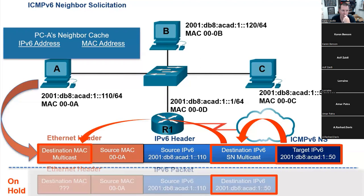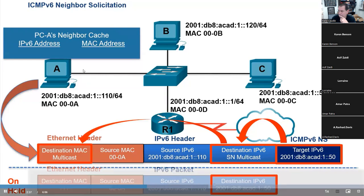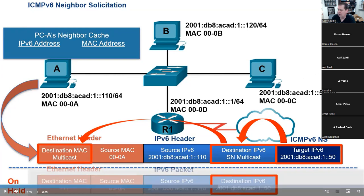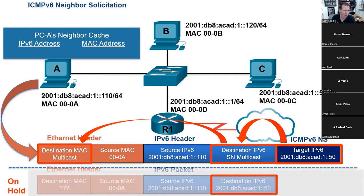This is the advantage of ICMPv6 neighbor discovery over ARP for IPv4 - since ARP uses an ethernet broadcast address, all devices on the local network must at least partially process an ARP request. A student asks for clarification. Every time you put an IPv6 address onto a host, it gives itself a solicited node multicast address. The negative is we haven't fully covered this yet, but let me pull something up.